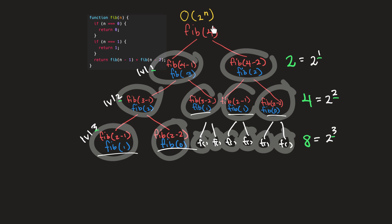So that means that if our n is four, we would go three levels deep. And at each level, the number of calls to our Fibonacci function increases exponentially. But you might be wondering — since our n is four and we stop at two to the power of three as opposed to two to the power of four — how does that result in this function being O of two to the n? Well, it's actually quite simple. In actuality, this Fibonacci function is O of two to the n minus one.